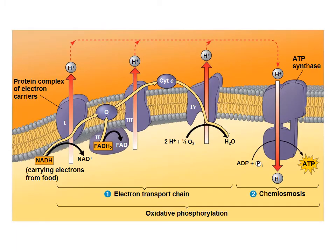An image of the electron transport chain shows the proton concentration gradient, the electrons being transported along the protein complexes, the production of water when hydrogen ions bind to oxygen, and the production of ATP as protons pass through ATP synthase. The picture doesn't show ATP synthase as a rotary complex very well, though.